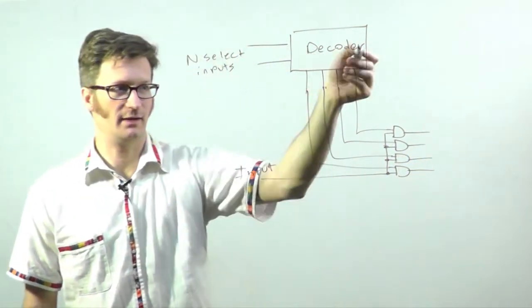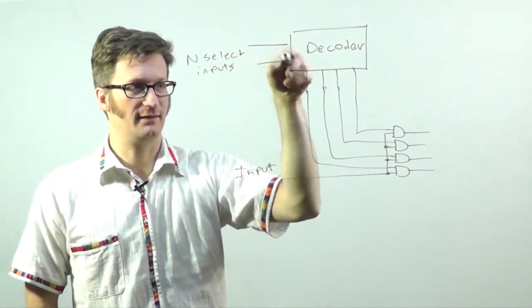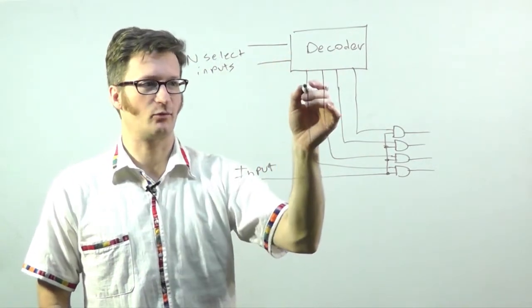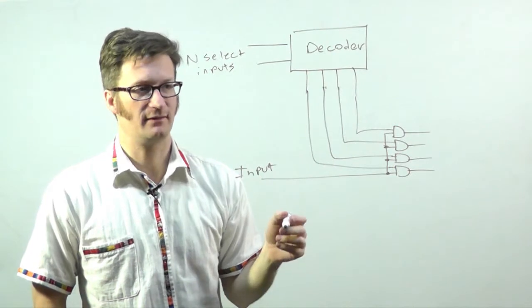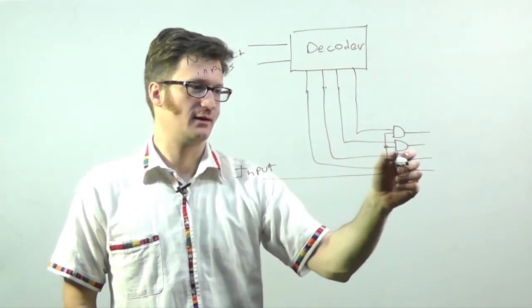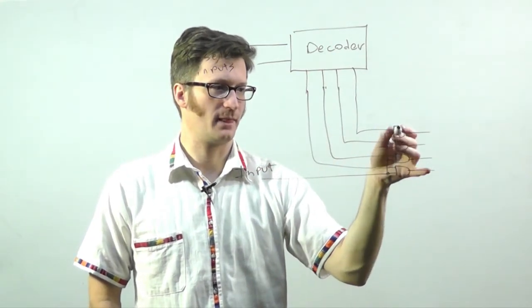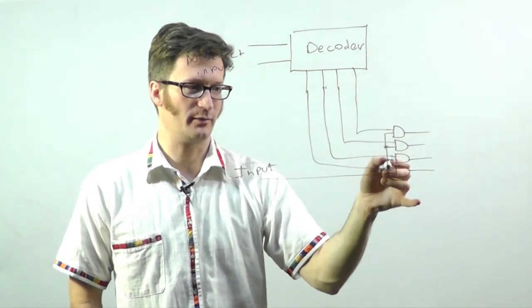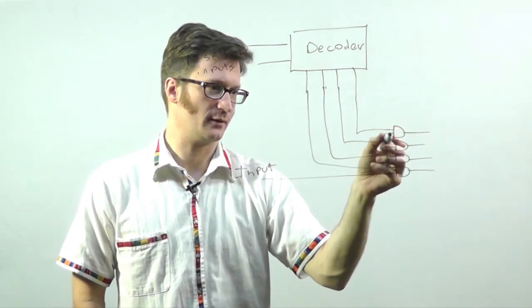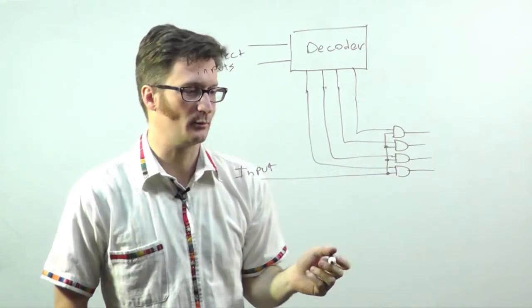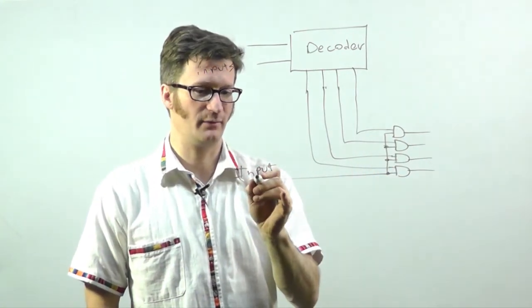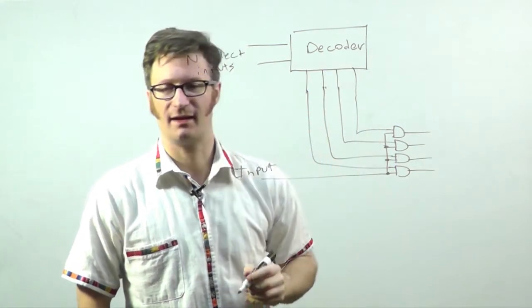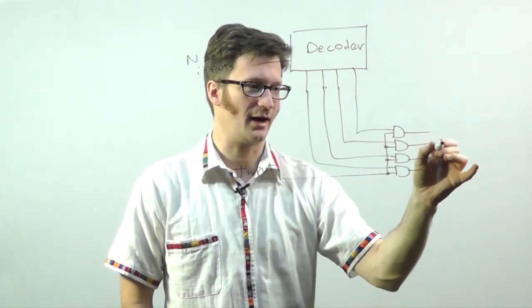So as you recall, the decoder has these select inputs which selects one of the 2 to the n outputs, which will allow one of these AND gates to have a high input. All the others will be low for their non-common input, and then if this input is high as well, then the selected AND gate will be outputting a high.